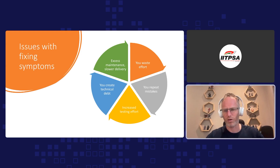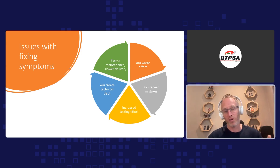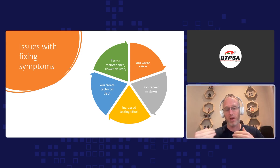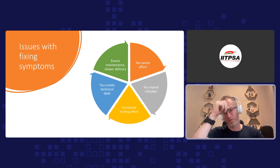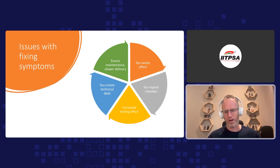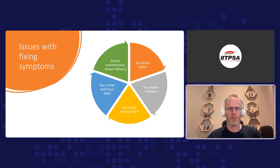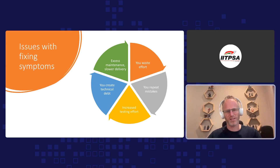Even if we feel like we're making progress and we've reduced our defect counts, those defect counts are often the same things popping up with the same causes. We tend to repeat those mistakes, which obviously increases testing effort — as a tester, we've got to test these things over and over and over again. Every time there's a change we've got to go back and test. That increased testing effort is really quite frustrating — you find an issue, you test again, you find the same sort of issues, constantly retesting the same thing. Even if it's automated, it's still frustrating.